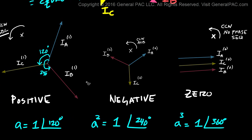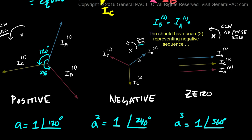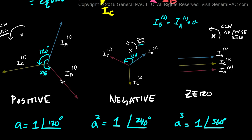Now let's do the same thing with the negative sequence component. It's going to be a little bit different. The negative sequence has the same magnitudes and is displaced by the same 120 degrees, making it a balanced system — but it has an ACB phase sequence. That's the key difference. To represent IB negative sequence with respect to IA negative sequence, we rotate IA by 120 degrees, using the A operator. For the positive sequence, we had to rotate by 240 degrees, but for the negative sequence, we only rotate by 120 degrees.